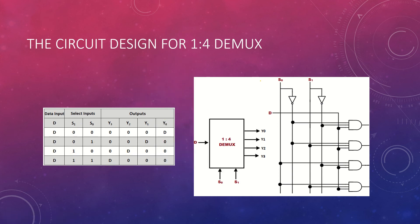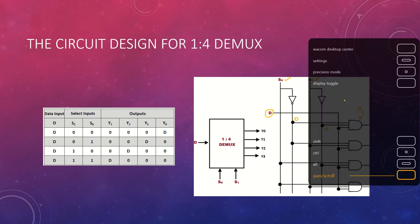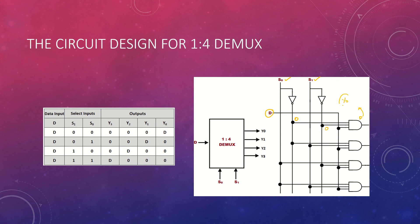Now let's design the circuit. We have one input D and two select lines S0 and S1. Taking the first case: S0 is 0 and S1 is 0 — D passes through and the output is connected to Y0. For the next case where S0 is 0 and S1 is 1, D is available and the output should be at Y2.